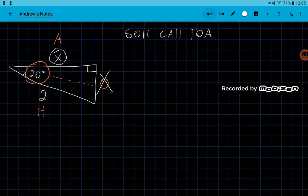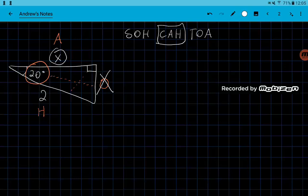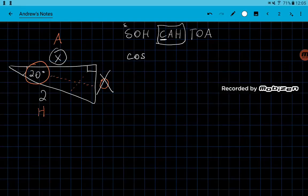Not sine, cosine does. So we're going to use CAH, so notice that CAH is with the C, so C stands for cosine, remember S stands for sine, and T stands for tangent.